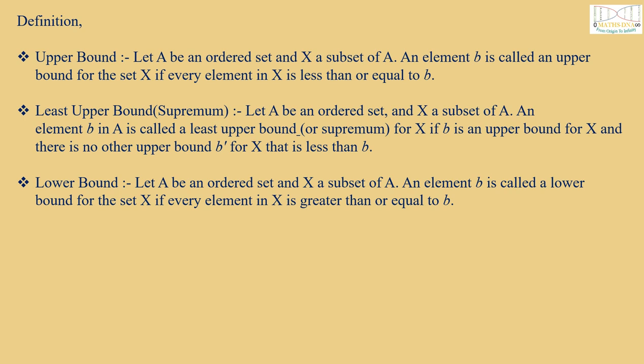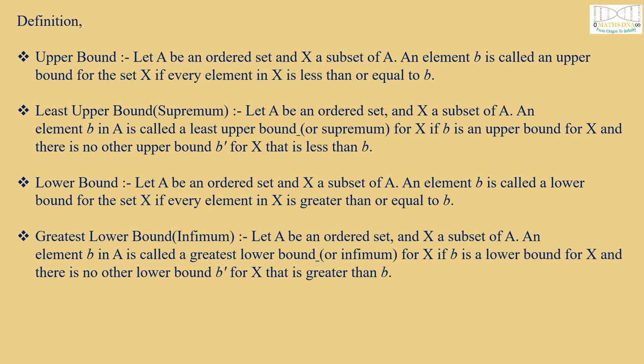Lower bound: Let A be an ordered set and X be a subset of A. An element B is called a lower bound for the set X if every element in X is greater than or equal to B. Greatest lower bound or Infimum: An element B in A is called a greatest lower bound or Infimum for X if B is a lower bound for X and there is no other lower bound B' for X that is greater than B.